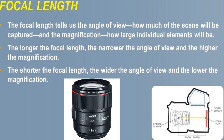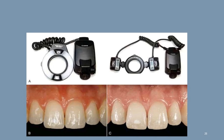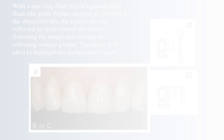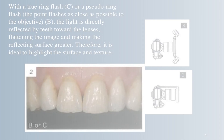Types of camera flash include: built-in and pop-up flash, dedicated camera flash, macro or ring light flash, twin flash, and hammerhead flash. Twin or lateral (point) flashes prevent extensive reflection on the tooth surface, making them ideal for documentation and image color determination. With a true or pseudo ring flash, light is directly reflected by teeth toward the lens, flattening the image and making the reflecting surface appear greater — ideal for highlighting surface texture.